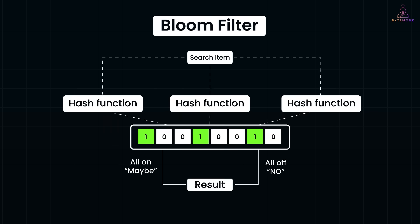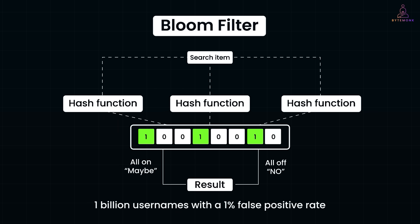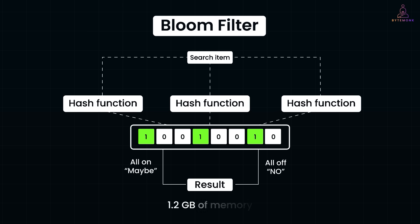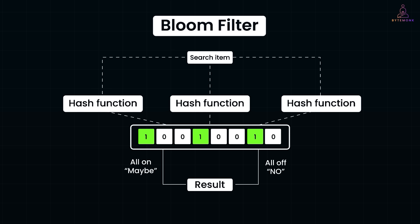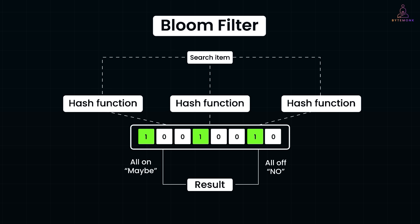The space savings are significant. To store 1 billion usernames with a 1% false positive rate, you'd need roughly around 1.2 GB of memory — a fraction of what it would take to store full keys in a cache. This is why large-scale systems like Cassandra use bloom filters to avoid unnecessary disk lookups. In some cases, companies keep a global bloom filter of all taken usernames in memory, so most lookups can be filtered upfront, saving both time and compute. In short, bloom filters act as a first line of defense — they handle the definitely-not-present cases instantly, reducing load on caches and databases downstream. That's what makes them a go-to technique in systems that deal with billions of records and need fast, cost-effective membership checks.